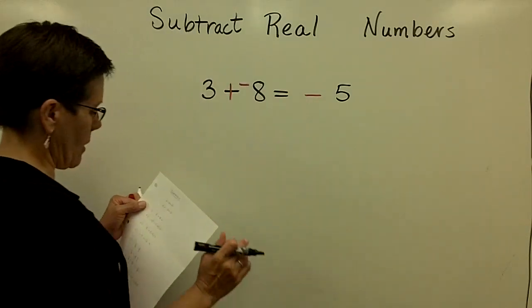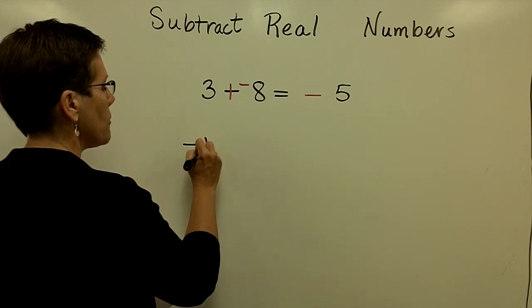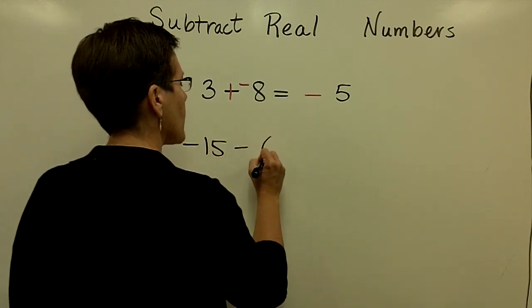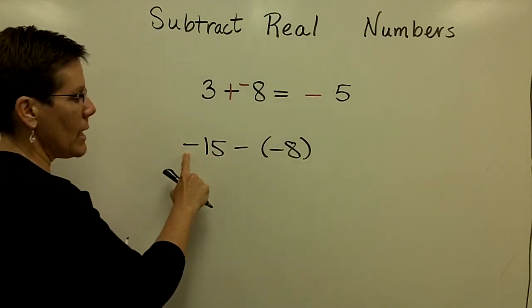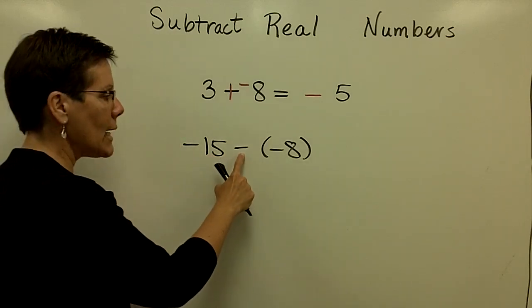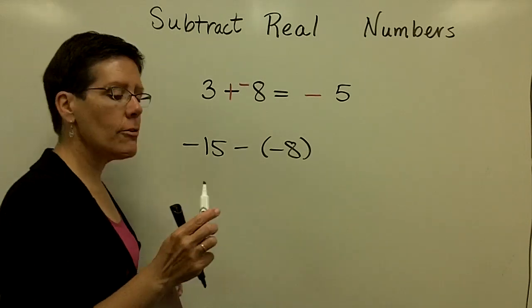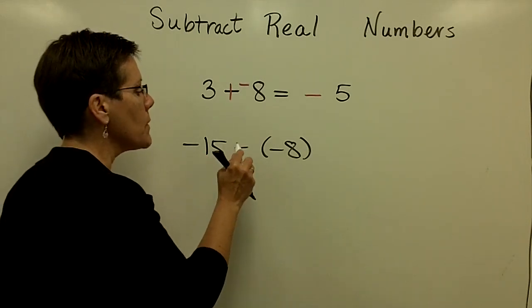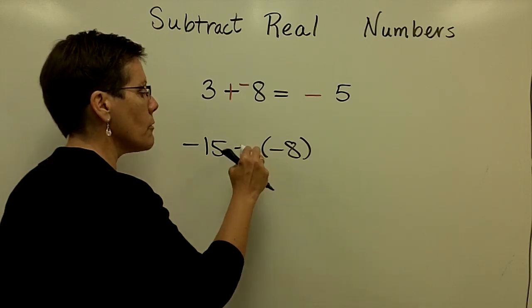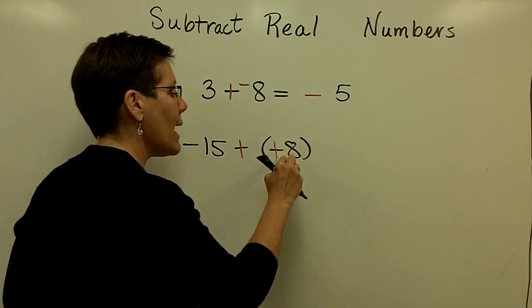Let's do another. I think I'll leave that one there. Let's take a negative 15 and subtract a negative 8. So again, remember to read this correctly, a negative 15 minus a negative 8. So whenever I subtract, you don't have to use your pencil every time if you can do this mentally, but when I subtract a negative, I add a positive.